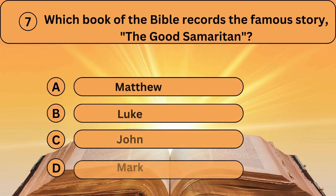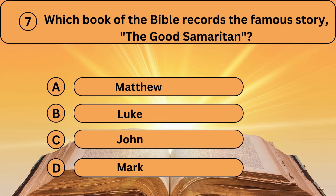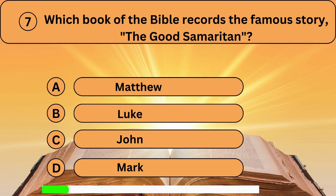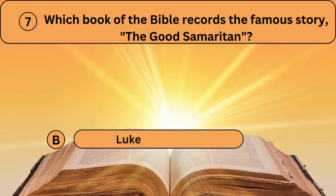Question seven. Which book of the Bible records the famous story, The Good Samaritan? A. Matthew. B. Luke. C. John. D. Mark. Luke is the correct answer.